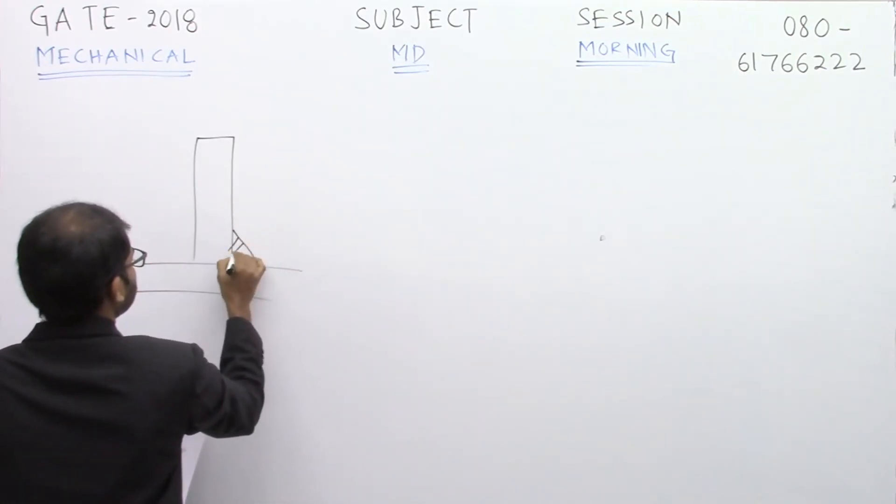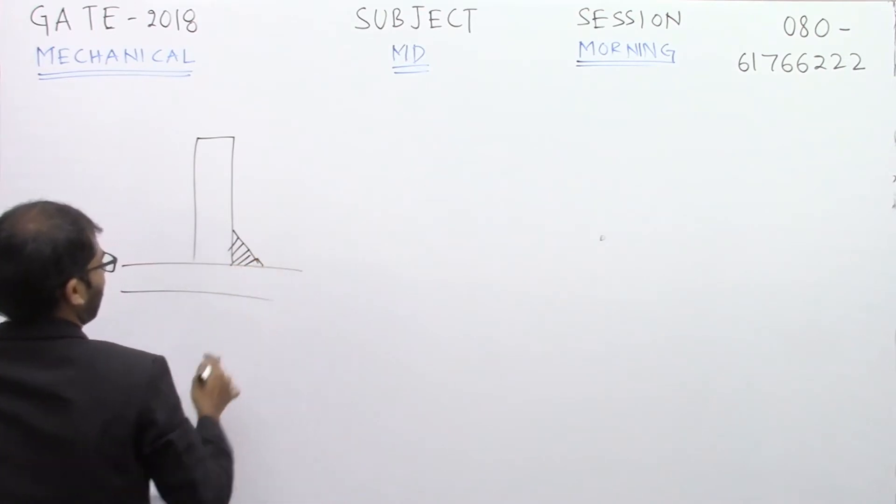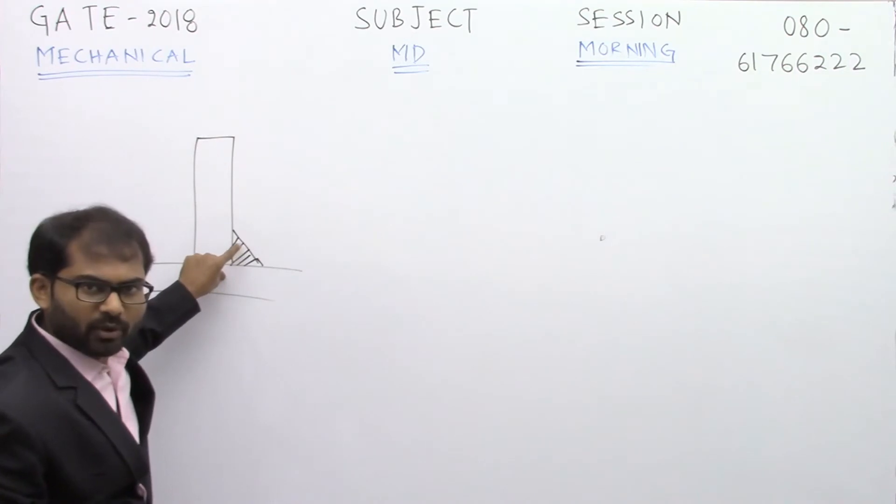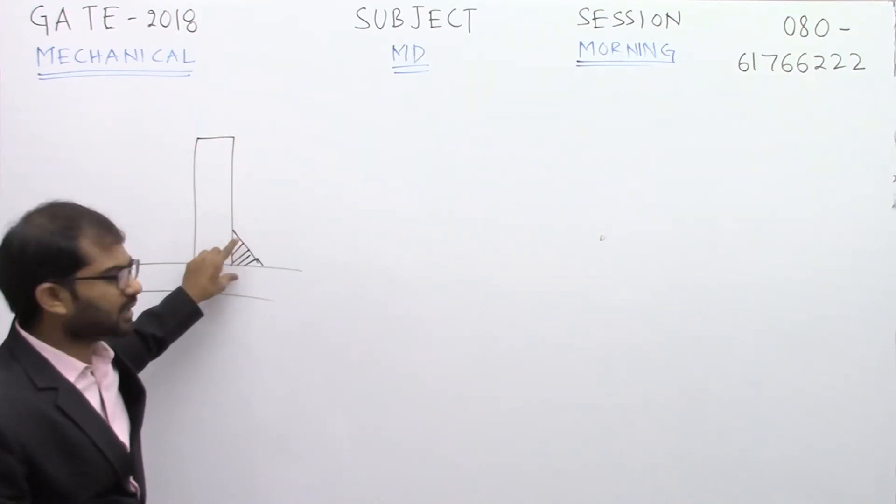So here the shaded region is like this. So actually to join a vertical plate and horizontal plate, we have dropped or we have applied the weld material in this way here.